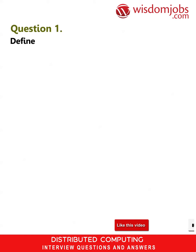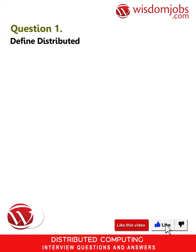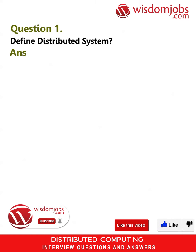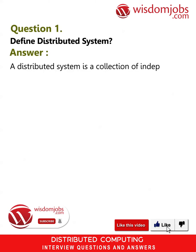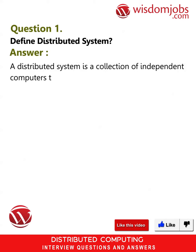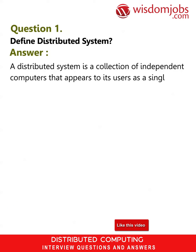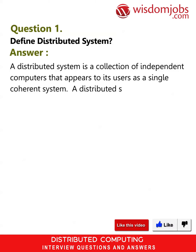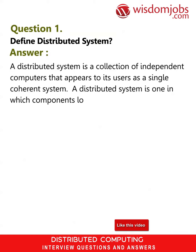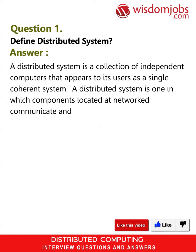Question 1: Define distributed system. Answer: A distributed system is a collection of independent computers that appears to its users as a single coherent system. A distributed system is one in which components located at a network communicate and coordinate their actions only by passing messages.